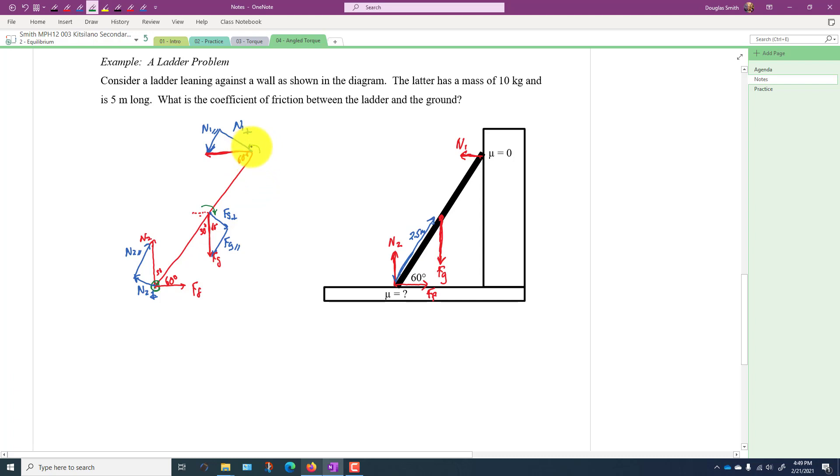So those two torques are equal and opposite. It's this idea that all the clockwise torques add up to all the counterclockwise torques. So clockwise that would be Fg perpendicular times the distance which was 2.5 meters, and that's equal to N1 perpendicular times 5 meters.